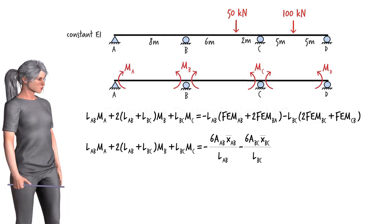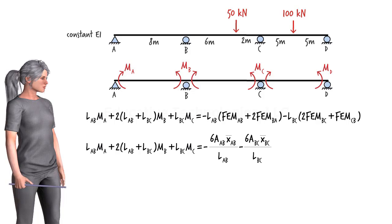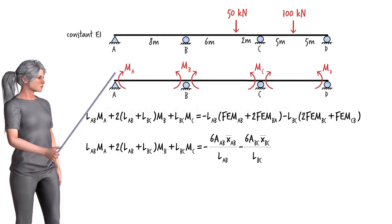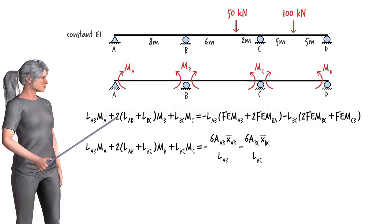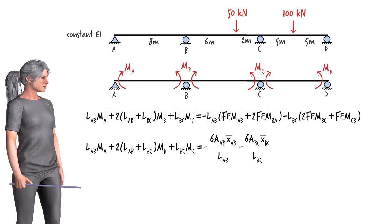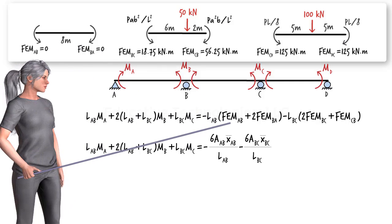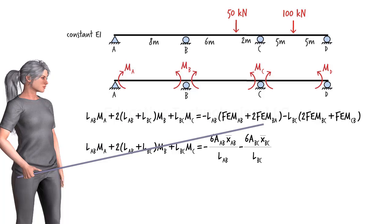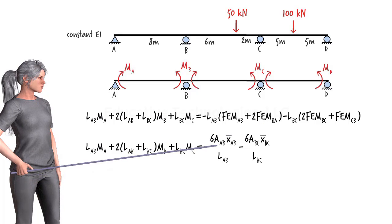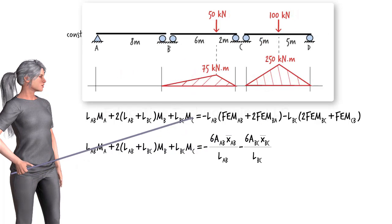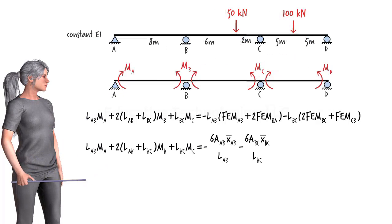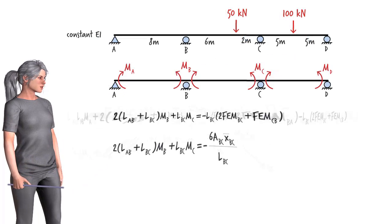First, we write a three-moment equation for segments AB and BC. Upon inspecting the beam, we can conclude that MA is zero since there is a pin support at point A. Further, since segment AB is not subjected to any loads, the fixed-end moments at the ends of the segment are zero — that is, those terms vanish. Also, the area under the moment diagram for isolated segment AB is zero. Therefore, we can simplify the equations accordingly.